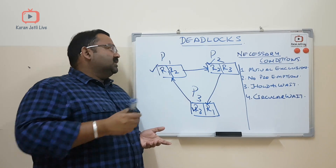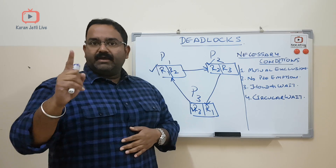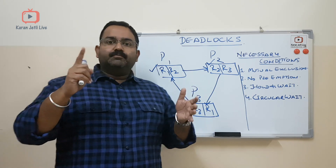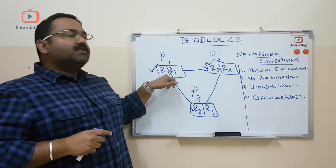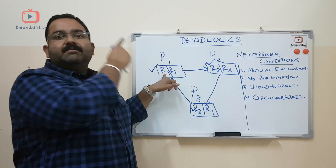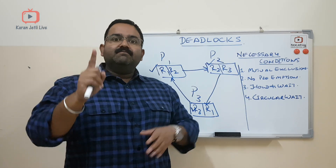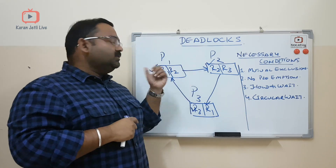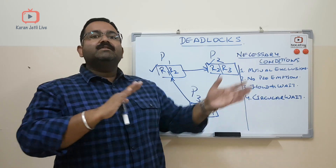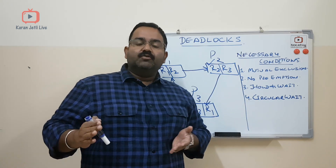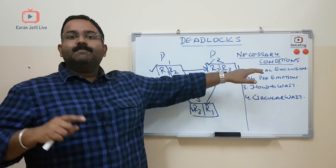The first condition is called mutual exclusion. Mutual exclusion means at a time, one resource is allocated only to one process. This resource cannot be shared. For example, R1 is allocated to P1 — at that time, no other process can share it. At a time, one resource is dedicated to only one process. When resources allocated to processes cannot be shared by other processes, we call it mutual exclusion.